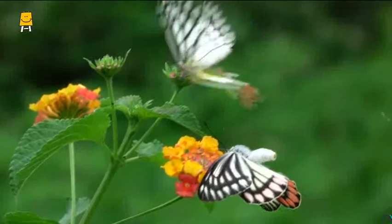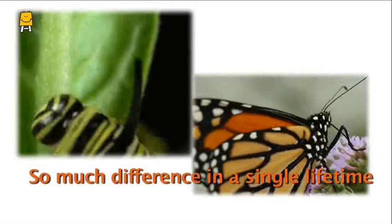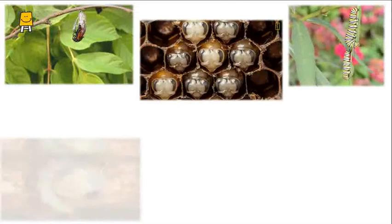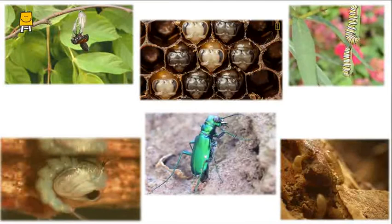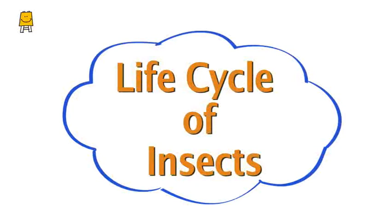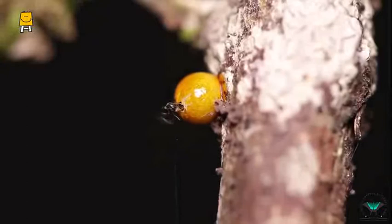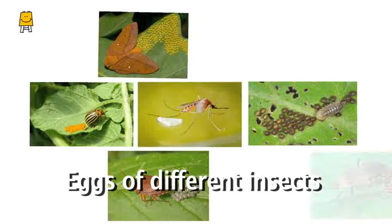How can a creeping caterpillar be a young form of a flying butterfly? Can there be so much difference in a single lifetime? To know the answer to this one has to understand the unique life of insects. This is the topic for today: life cycle of insects. Whichever the insect, its life cycle always starts with an egg.